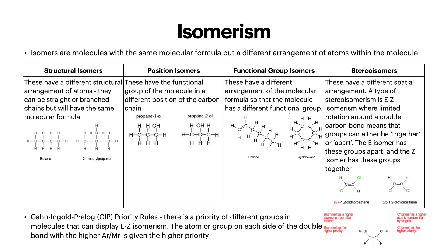Position isomers have the same functional group of the molecule but in a different position on the carbon chain — for example, the alcohol can change from the first to the second carbon. Functional group isomers have a different arrangement of the molecular formula, so the molecule has a different functional group. Stereoisomers have a different spatial arrangement. A type of stereoisomerism is EZ isomerism, where limited rotation around a double carbon bond means groups can either be together or apart.